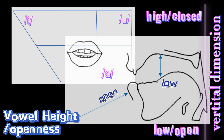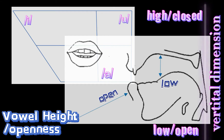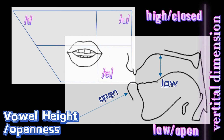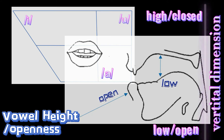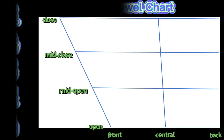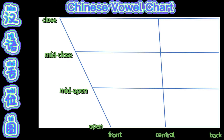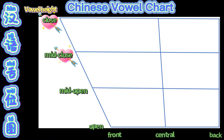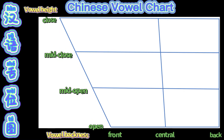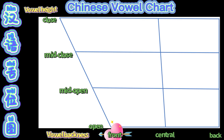In contrast to the two high vowels 'yi' and 'wu', we produce the vowel 'a' with the tongue positioned very low in the mouth with the mouth wide open. So the vowel 'a' is in the low or open vowel category. In this vowel chart, we use four degrees of vowel height: close, mid-close, mid-open, and open; and three degrees of vowel frontness: front, central, and back.